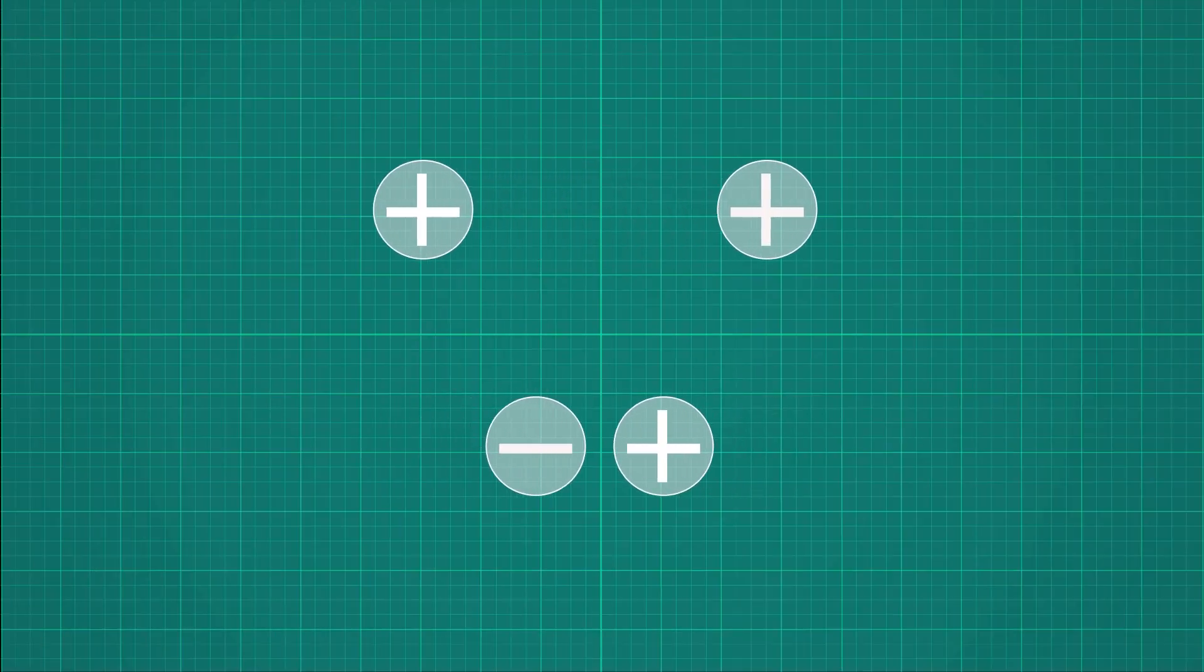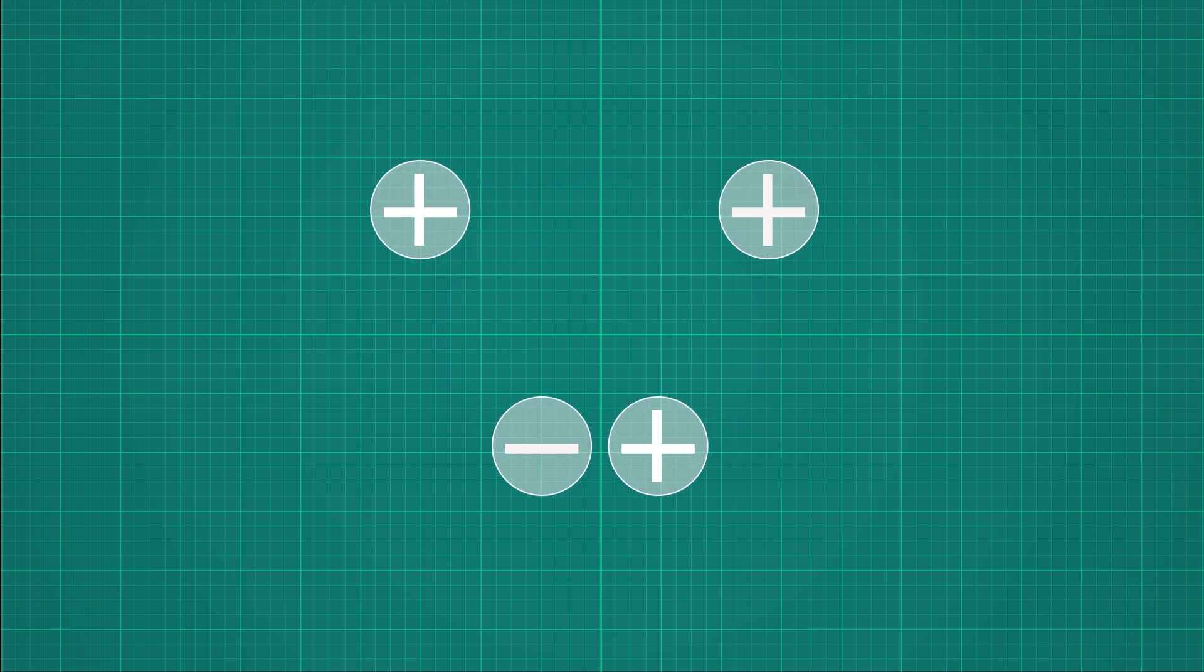We all know that like charges repel each other and unlike charges attract each other to make the atom neutral or to make anything balanced. This is the basic law of nature. This concept is applied here on the atomic scale.